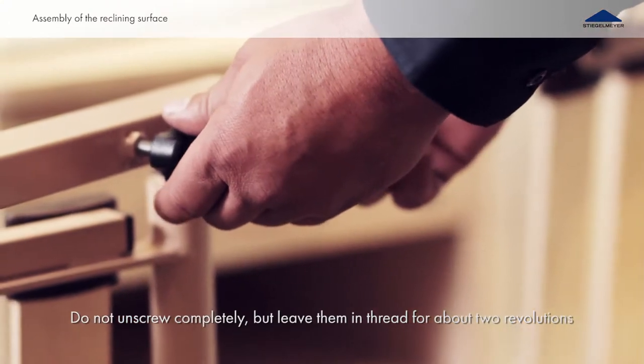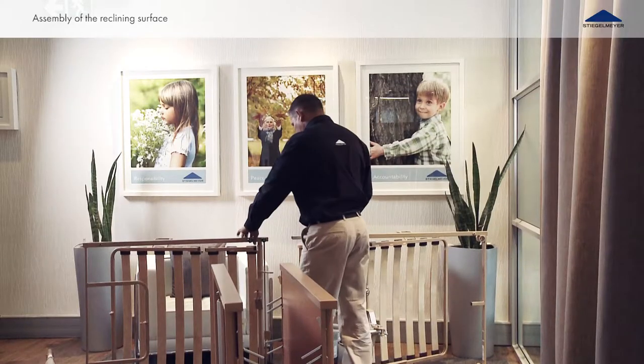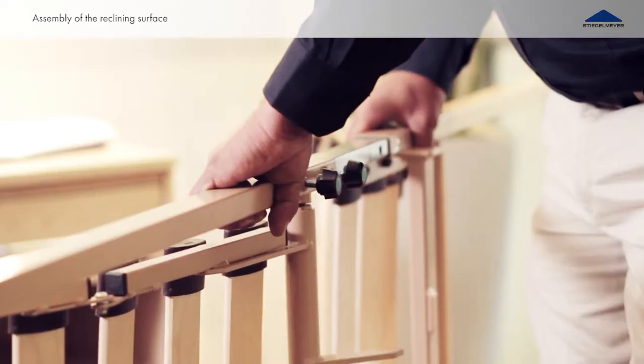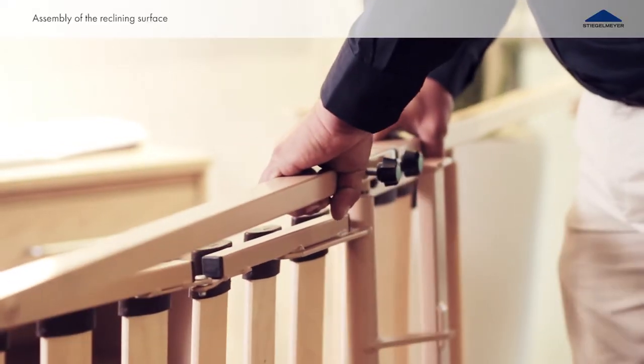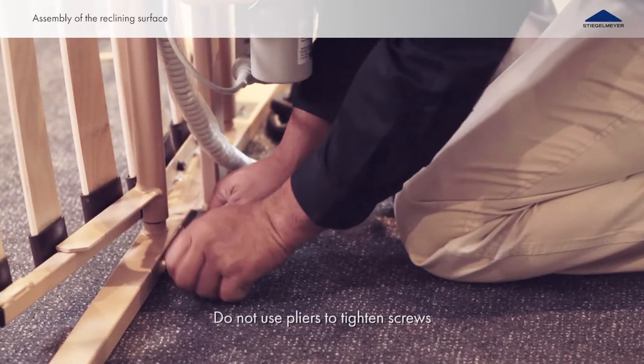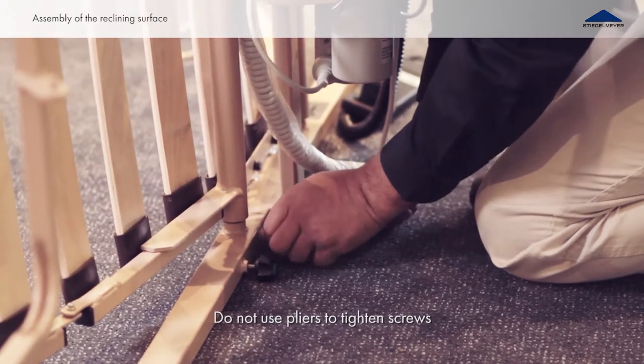Loosen the four knurled screws. Insert the halves of the reclining surface frame into each other. Tighten the four knurled screws, two on each side.